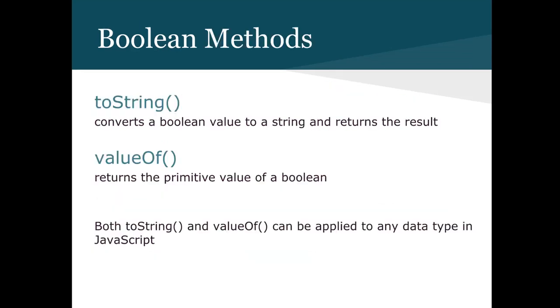Boolean methods. toString and valueOf are methods that can be used on Booleans. These two methods can be used on any data type in JavaScript. They both return the value of the Boolean results. toString converts its data type to a string as well.